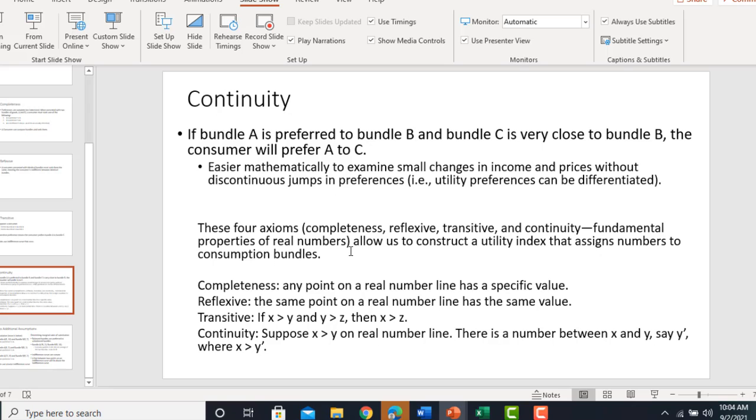These four axioms allow us to construct a utility index that assigns numbers to consumption bundles—that is, a utility function. So, completeness implies any point on a real number line has a specific value. Reflexive: the same point on a real number line has the same value.